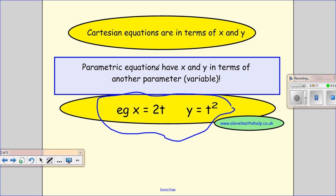Basically they're equations where we have x and y in terms of another parameter, another variable. In this case we've got them in terms of t. It needn't be t, but it often is.